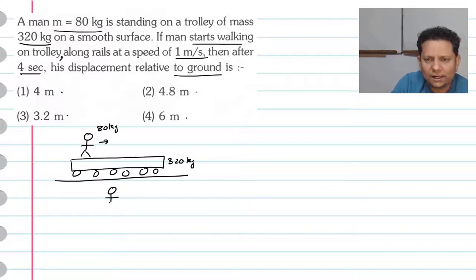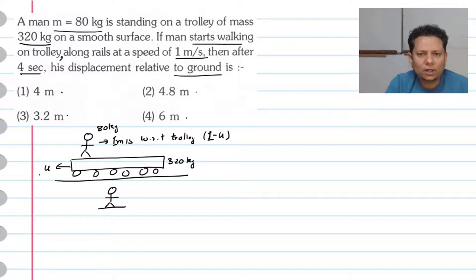Now if this person is moving in this direction, you are looking at the ground frame. So this person has 1 meter per second velocity, which is with respect to the trolley, not with respect to ground. And if the trolley velocity is u, then the man's velocity is 1 minus u, because the trolley is moving backward.